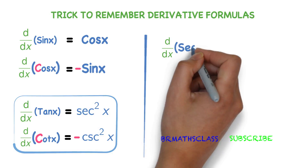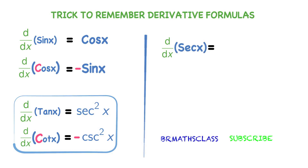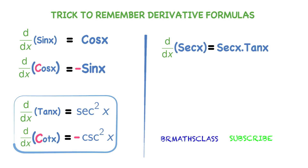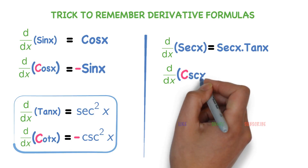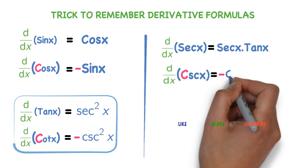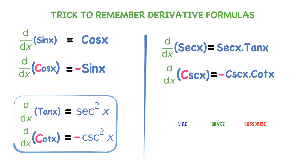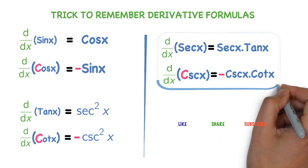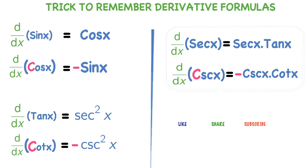Derivative of secant x equal to secant x into tan x. Observe here: derivative of secant x starts with secant x. Derivative of secant x is secant x into tan x.